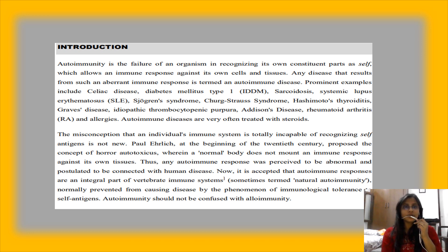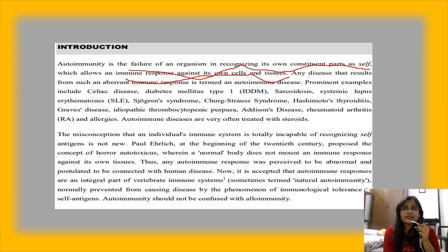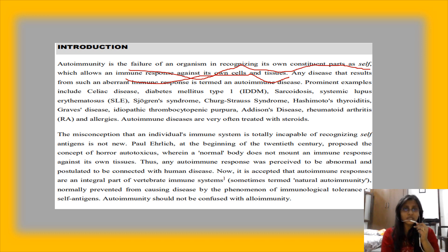So what is autoimmunity? A clear-cut definition: autoimmunity is the failure of an organism in recognizing its own constituent parts, which allows the immune response against its own cells and tissues. This is a kind of confusion created in the immune system, which causes immune cells to act not against a pathogen but against the body's own cells. Examples include celiac disease, diabetes mellitus, Hashimoto's thyroiditis, Graves' disease, rheumatoid arthritis, Addison's disease, etc.